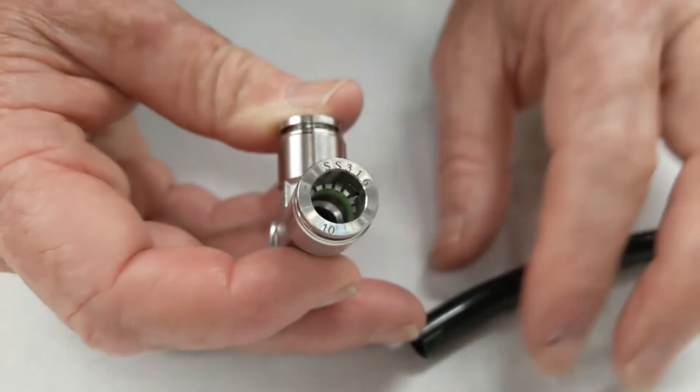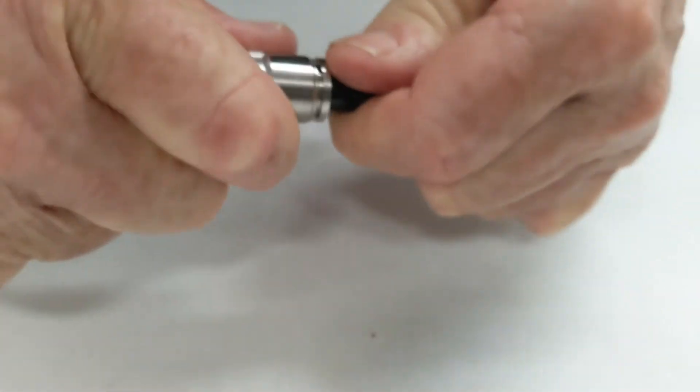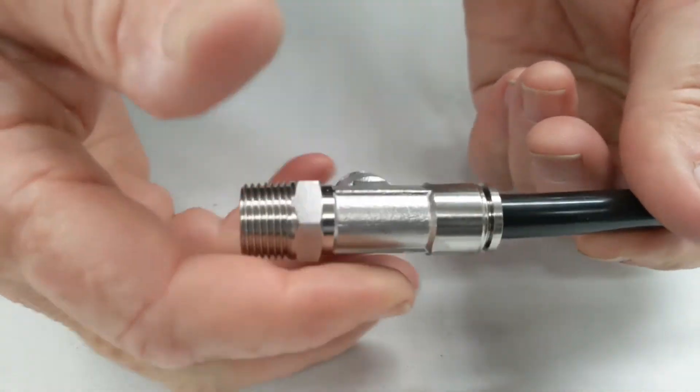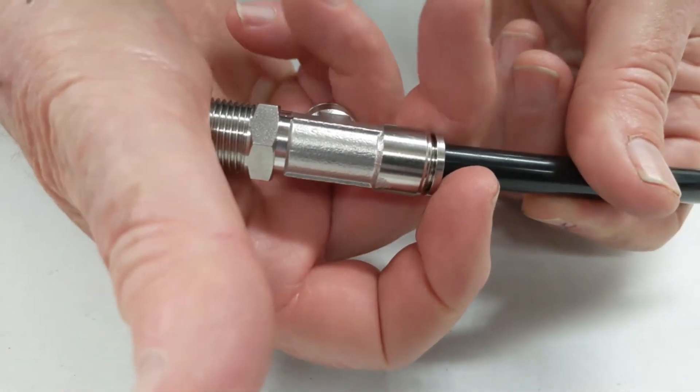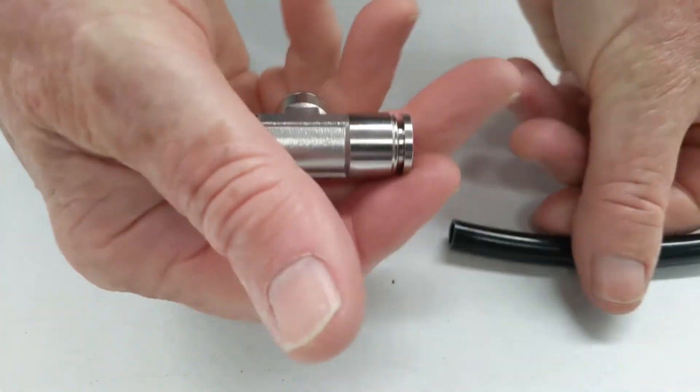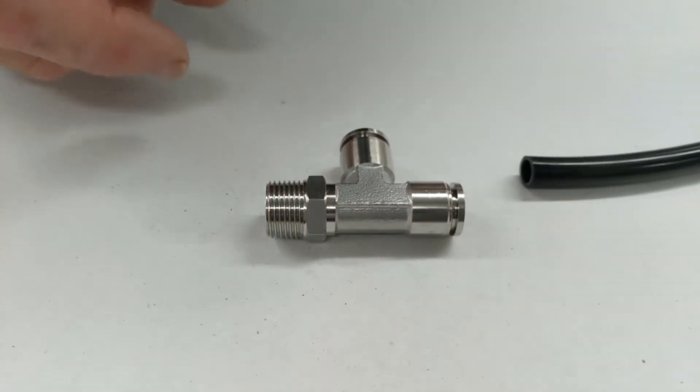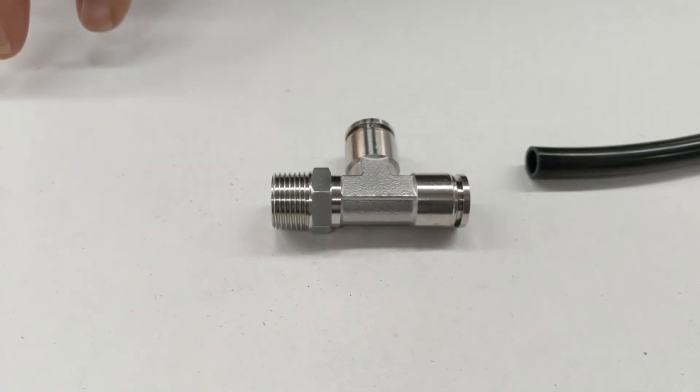You put the tube into here, it pushes in and locks into place. To release, you hold the fitting and pull the collet back, pulled out like that.